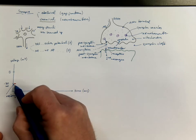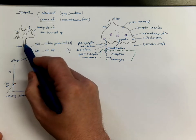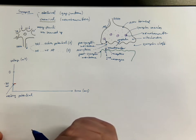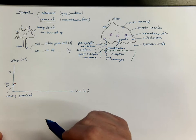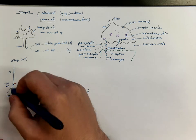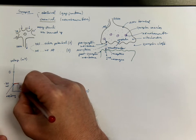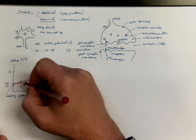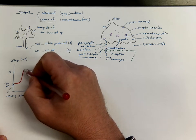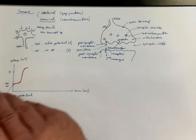The resting potential is caused by an imbalance of charged particles — ions — on both sides of the cell membrane. This imbalance results from the activity of various ion channels and ion pumps. If there is a stimulus strong enough, it will cause opening of ion channels and the voltage will go back to zero and even for a short time to positive values.